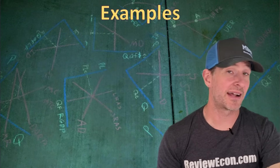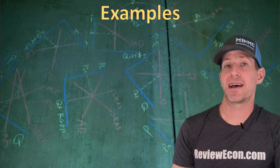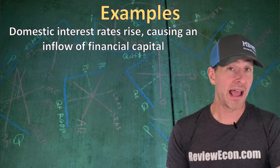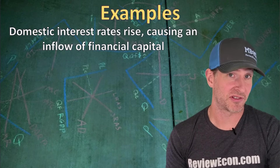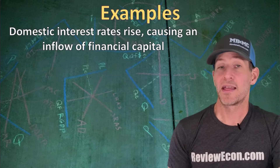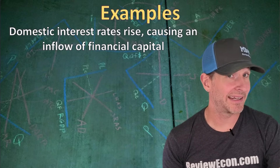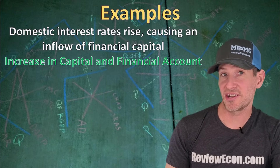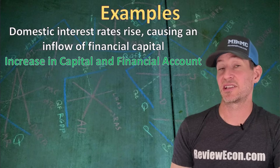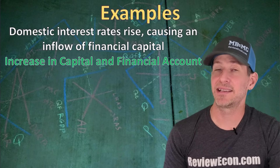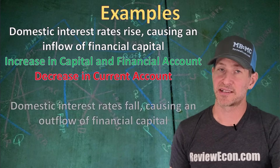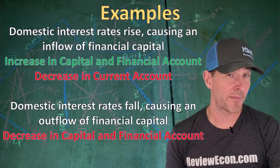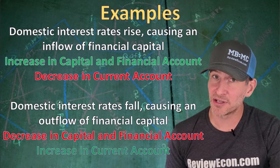For another example dealing with the capital and financial account: if domestic interest rates increase, foreign investors are going to seek those high interest rates and purchase bonds that earn them, meaning we have an inflow of financial capital. That inflow increases the capital and financial account. And because of changes in the foreign exchange market, we're likely to see a decrease in net exports, leading to a decrease in the current account. If domestic interest rates were to decrease, on the other hand, that would cause a financial capital outflow, decreasing the capital and financial account and increasing the current account.